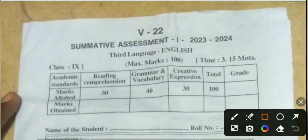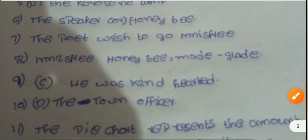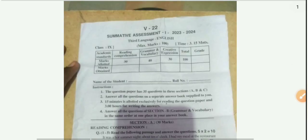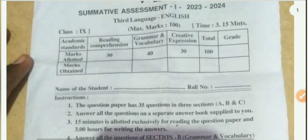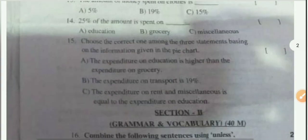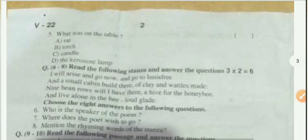This is your Class 9 Third Language English question paper, and this is your answer sheet. You can see the full answer sheet in this video. This question paper PDF is available on our Telegram group, so don't forget to join. The Telegram group link is in the description — also check out the channel.